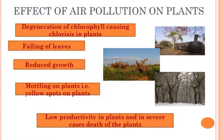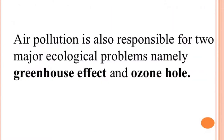Gaseous pollutants not only affect our health, they also harm our plants. Degeneration of chlorophyll causing chlorosis in plants is one of the effects. Falling of leaves, reduced growth of plants, mottling on plants — that is yellow spots on plants — low productivity in plants, and in severe cases the death of the plant. Air pollution is also responsible for two major ecological problems, namely the greenhouse effect and ozone hole.